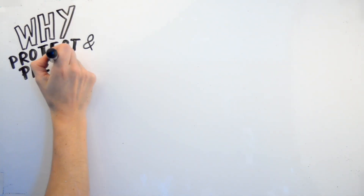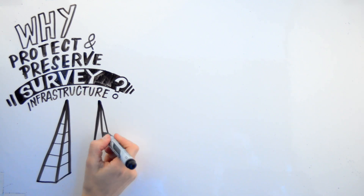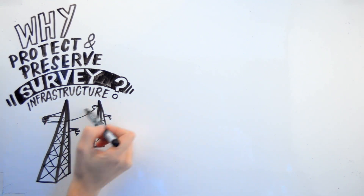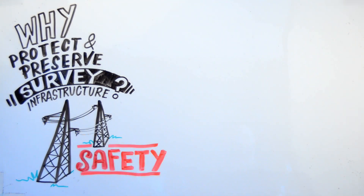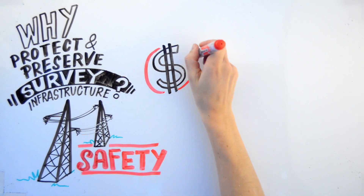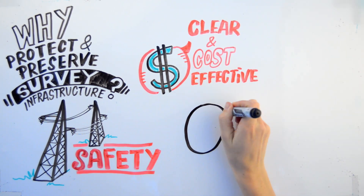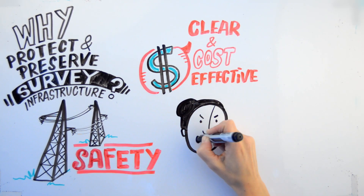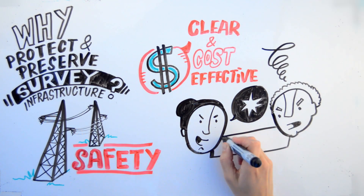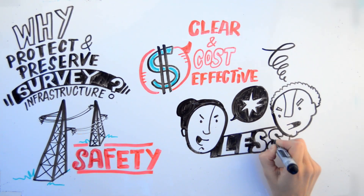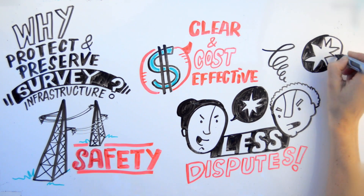Why protect and preserve survey infrastructure? They exist for safety reasons, so that electrical and gas lines are in the correct location to avoid serious personal and property damage. They are a form of cost-effective, clear communication which requires a consistent geodetic coordinate system pinned to the ground with survey infrastructure. They provide the correct layout of baselines and elevations and also minimize the risk of disputes.